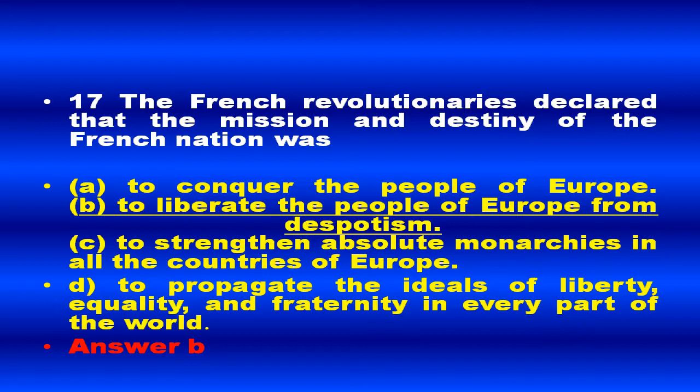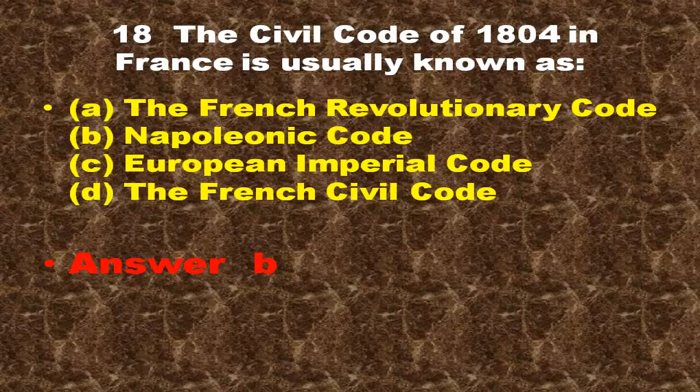Question number 17: The French revolutionaries declared that the mission and destiny of the French nation was? The answer is to liberate the people of Europe from despotism. Question number 18: The civil code of 1804 in France is usually known as the Napoleonic Code.